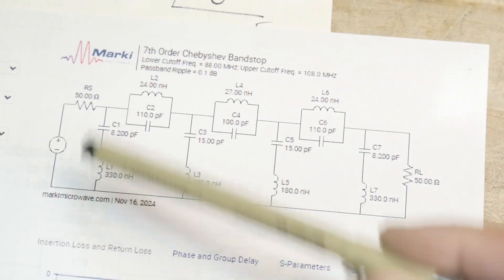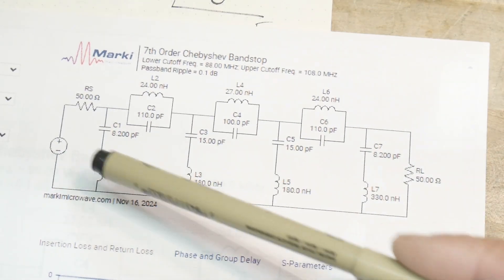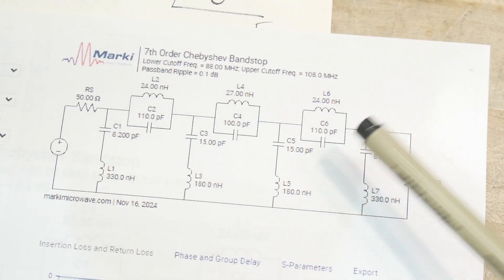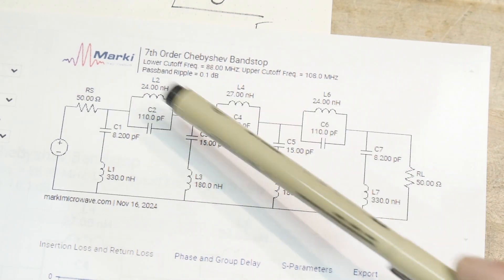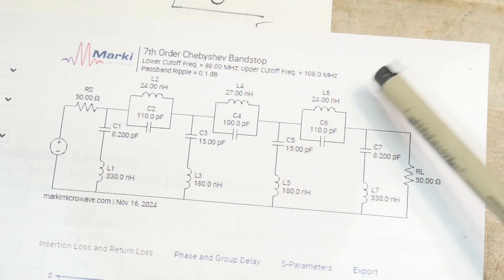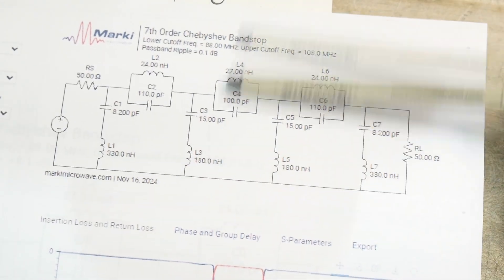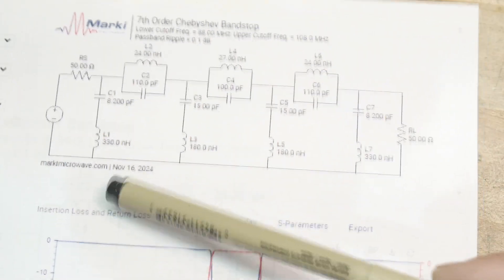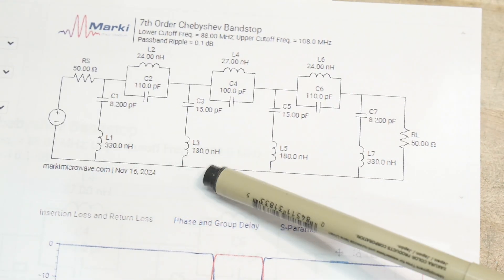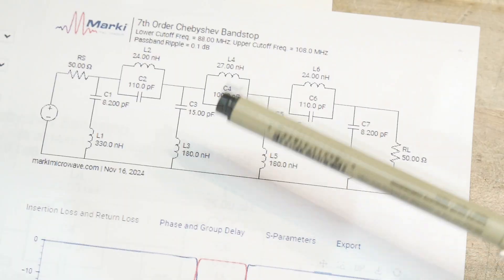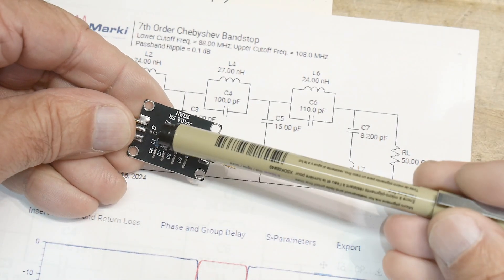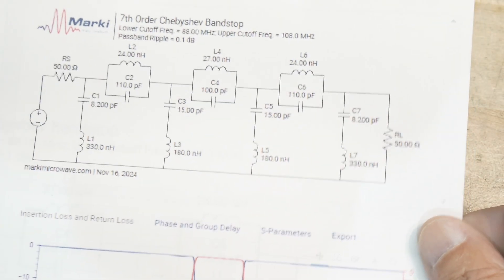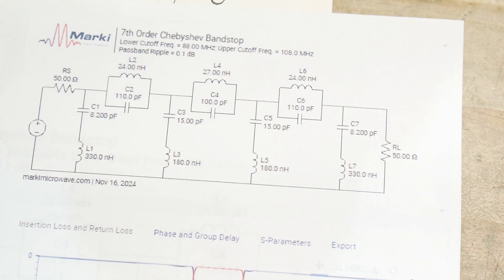It's the same shape L's and C's. Here you have 100 picofarad, 100 picofarad, actually it's 110, 100, 110. We have 24 nanohenrys, 27 nanohenrys, 24 nanohenrys. It's going to be symmetric around the middle, so whatever's on this side is on that side. Here we have some 330 nanohenrys and 180 nanohenrys - these are a lot bigger than these. If you just look at the board you can see that one inductor is bigger than the other. It will do something similar to this, and I say we measure it.